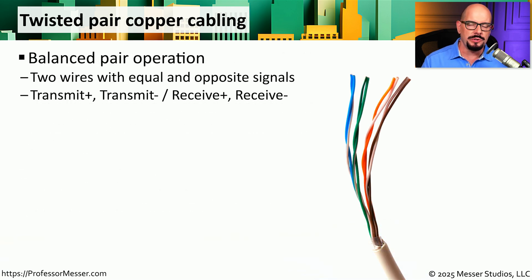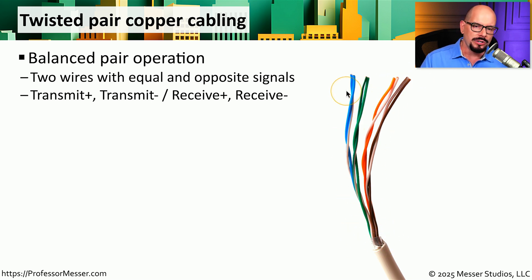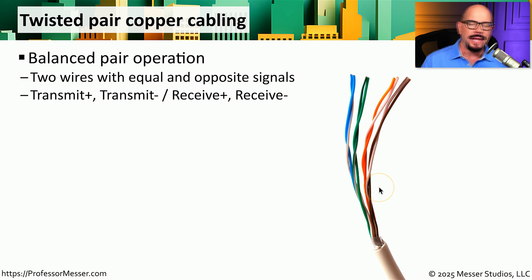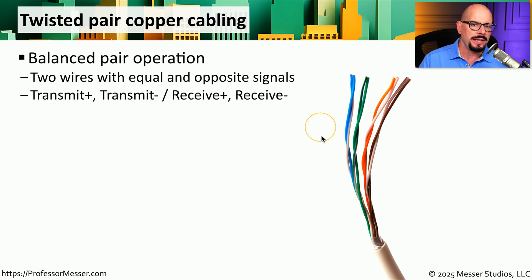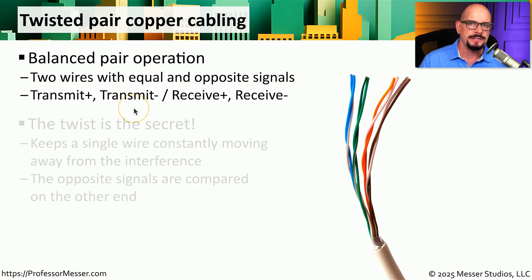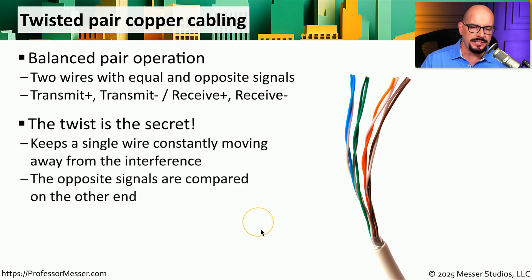A huge number of the cables we use on our wired Ethernet networks are twisted pair copper cables. We refer to these as twisted pair because the individual wires inside are twisted together into pairs. You can see the blue pair is twisted together, the green pair, the orange pair, and the brown pair. Each one of those wire pairs contains equal and opposite signals — one wire is transmit plus, the other is transmit minus. The reason these wires are twisted is that one side of that pair is constantly moving away from any interference or noise in the environment.